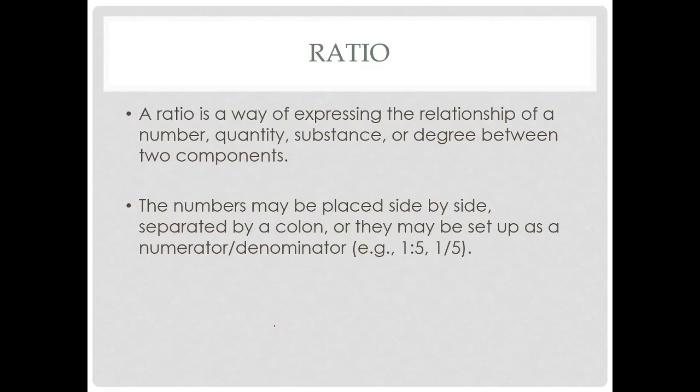A ratio is a way of expressing the relationship of a number, quantity, substance, or degree between two components. If we are seeing a ratio and usually there's a colon separating it. So the numbers are placed side by side and it's one to five. So there's one person with blonde hair and five people with black hair. Then we have a one to five ratio.